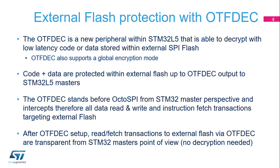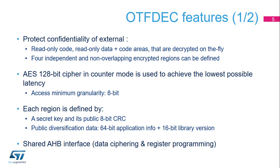The OTF-DEC is a companion IP of the OctoSPI peripheral. It intercepts any data read, write, and instruction fetch that targets the external flash. Decryption is transparent to the Cortex-M33 core; data and instructions that the processor receives have been decrypted in hardware by the OTF-DEC. The OTF-DEC protects the confidentiality of external read-only code and read-only data plus code areas, which are decrypted on the fly.